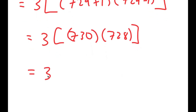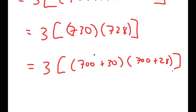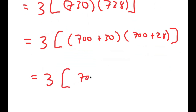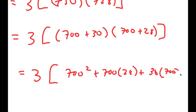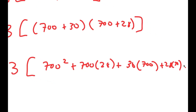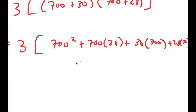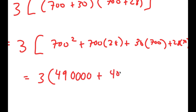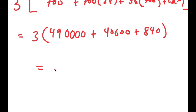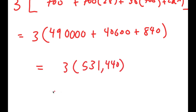From here, I'm going to rewrite this as 700 plus 30 times 700 plus 28. This is equal to 3 times 490,000 plus 40,000 plus 40,000, so this is equal to 3 times 531,440,000 plus 840,000, which is equal to 1,594,320. So this is my answer.